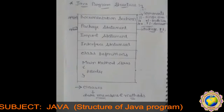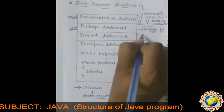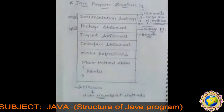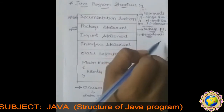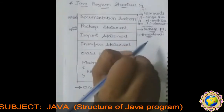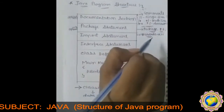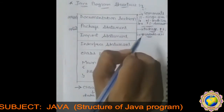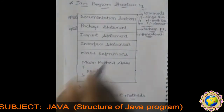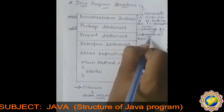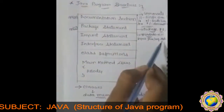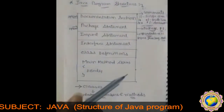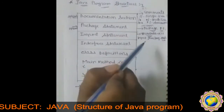The import section is similar to the hash-include statement we have already seen in C++, such as hash-include stdio.h or hash-include conio.h, where we import header files. In Java, instead of that, we write an import statement, like: import java.lang.Math. If we are doing mathematical operations in the program, we have to import java.lang.Math.